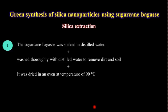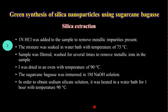The first step is silica extraction. The sugar cane bagasse is soaked in distilled water overnight, then washed thoroughly again with distilled water to remove dirt and soil, and dried in an oven at a temperature of 90 degrees centigrade. One normal hydrochloric acid was added to the sample to remove metallic impurities. The mixture was soaked in a water bath at a temperature of 75 degrees centigrade. The sample was then filtered, washed several times to remove metallic ions, and dried again in an oven at 90 degrees centigrade.